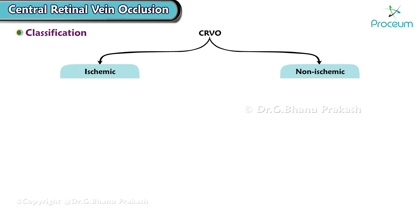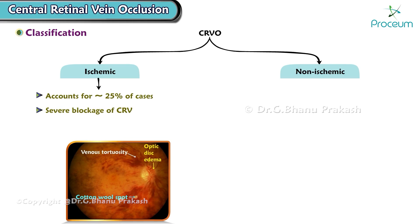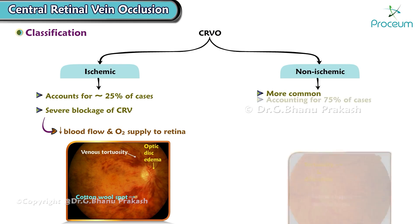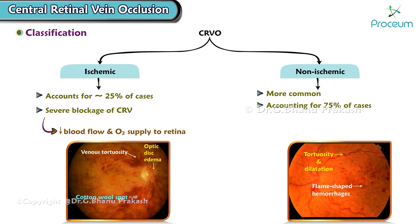Ischemic central retinal vein occlusion accounts for approximately 25% of cases. It's characterized by a severe blockage of the central retinal vein, leading to a significant reduction in blood flow and oxygen supply to the retina. On the other hand, non-ischemic central retinal vein occlusion is more common, accounting for 75% of cases, where the blockage is partial, allowing some blood flow to reach the retina.